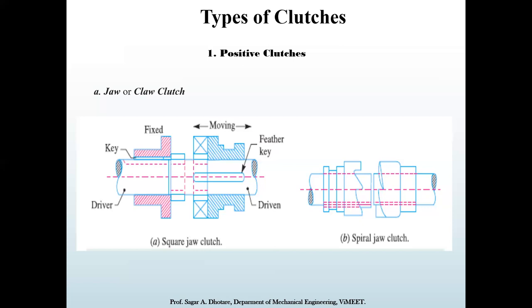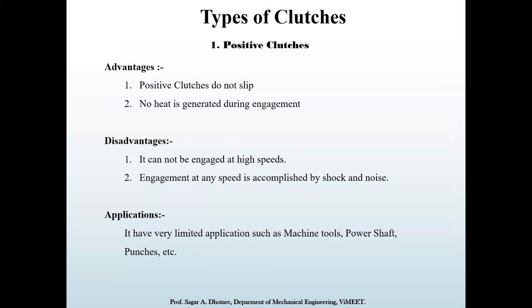In a spiral jaw clutch, male and female shapes are directly engaged with each other. Similarly, sudden engagement occurs, and most of these clutches can fail during operation itself. As for advantages of positive clutches: they do not slip because they are directly engaged within the slot, and no heat is generated during engagement as there are no frictional forces applied.